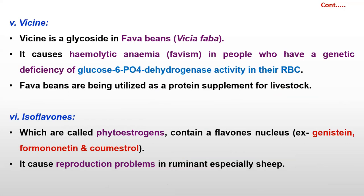Next to saponins is vicine. Vicine is a glycoside present in faba beans. Vicine is present in faba beans, which contain a good amount of protein, and it causes hemolytic anemia. Vicine causes favism in people who have a genetic deficiency of glucose-6-phosphate dehydrogenase enzyme activity. Those people who have deficiency of glucose-6-phosphate dehydrogenase activity may develop favism when they consume faba beans. Faba beans are being used as a protein supplement for poultry.